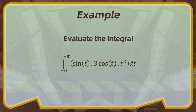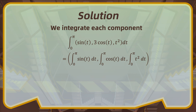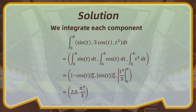Let's see an example. We must evaluate the integral from 0 to π of the vector-valued function whose components are sine t, 3 cosine t, and t squared. We integrate each component separately. After applying the fundamental theorem of calculus, we obtain the vector whose entries are 2, 0, and π cubed over 3.